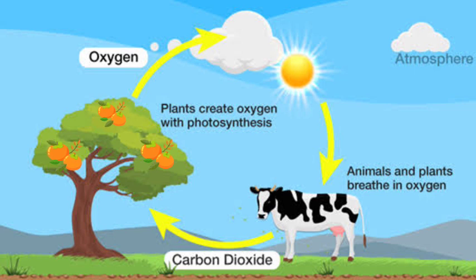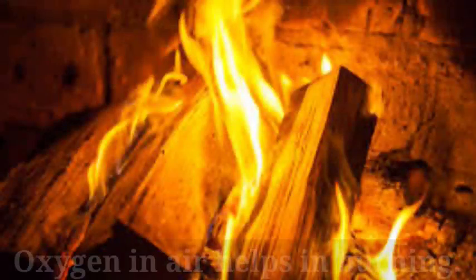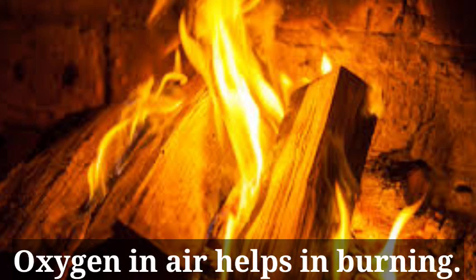When we eat fruits, vegetables and grains, we use the food made by plants. In this way air helps us get our food. Air has other uses too — for example, the oxygen in air helps to burn things like wood, coal and gas.